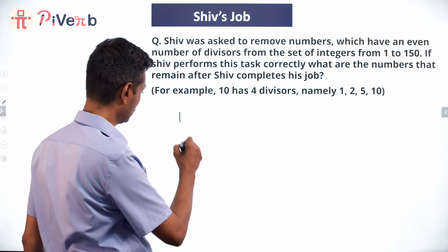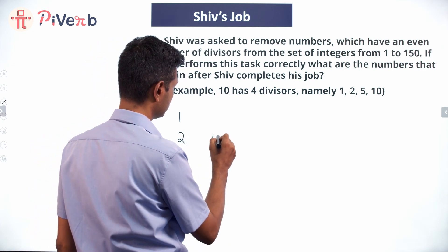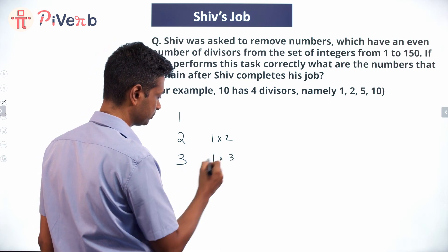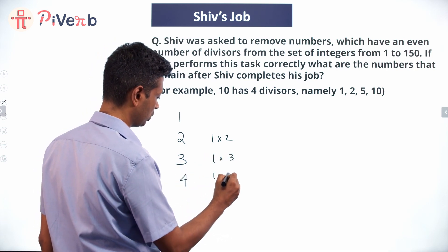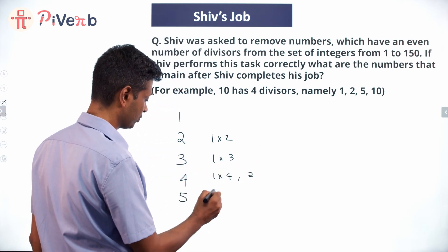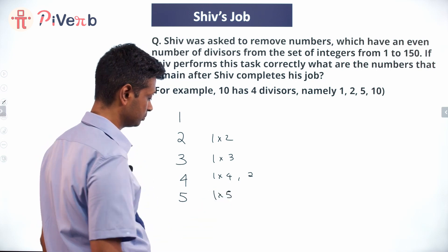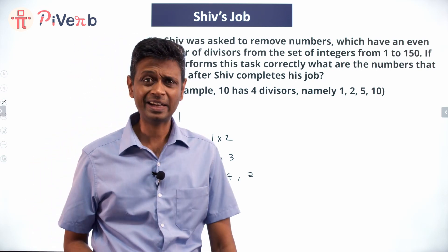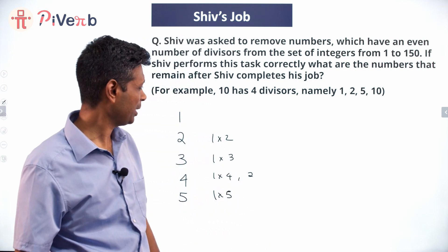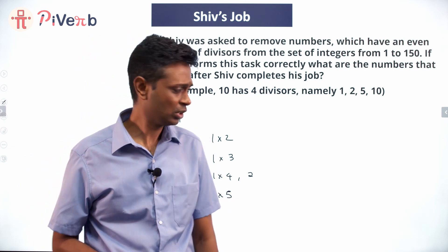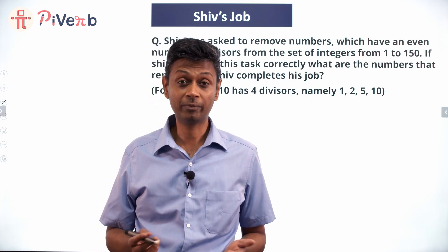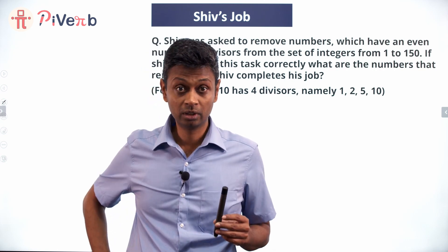Two has two factors: one and two. Three has two factors: one and three. Four has three factors: one, four, and two (since 2×2=4). Five has two factors: one and five. We can't obviously write down everything and cancel, so we're going to be methodical. We notice two, three, and five each have two factors — one and itself. Any prime number will have exactly two factors.